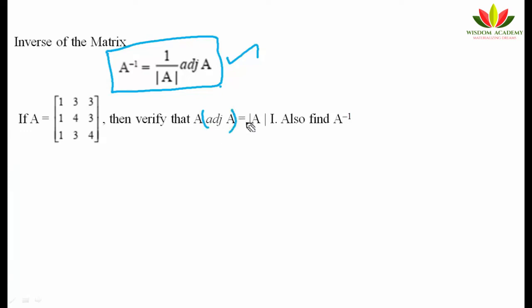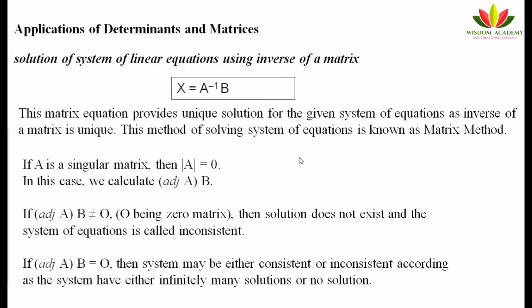A common exam question is to verify that A × adj(A) = |A| × I, and also find A⁻¹. Since we already compute the adjoint and determinant in the verification, we can use them directly to find the inverse. An important application of determinants and matrices is finding solutions to linear equations using the matrix method, where x = A⁻¹B.